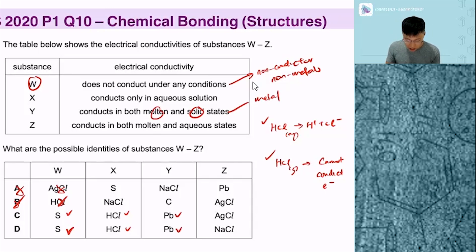So lastly, conduct in both molten and aqueous, and leaving out solid, it has to be an ionic compound. And over here, this is the best option, NaCl over here.